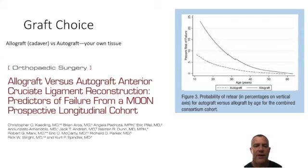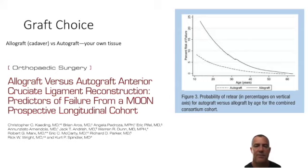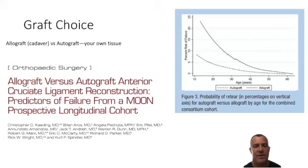There are a variety of factors we talk about for patients, including timing of surgery, fixation options, and rehabilitation protocols. Perhaps the most important and controversial is how we are going to reconstruct the ACL. Most of the time we are doing a reconstruction — giving you a new ACL — not a repair where we sew your old ACL together. When we talk about graft choice, there are two options: allograft, or cadaver tissue, and autograft, which is your own tissue.